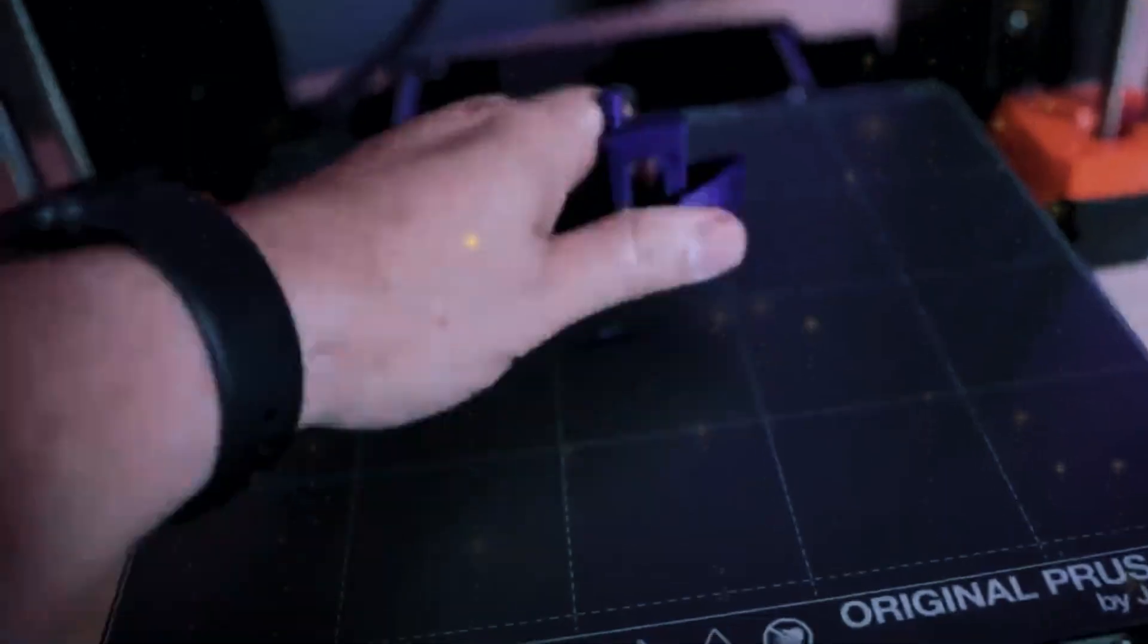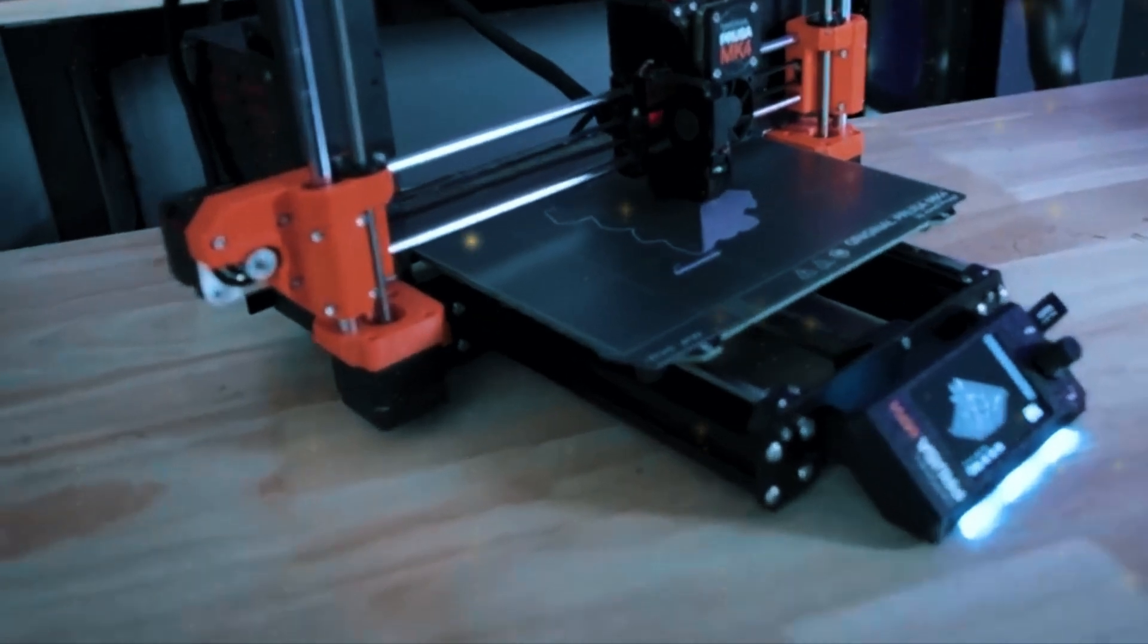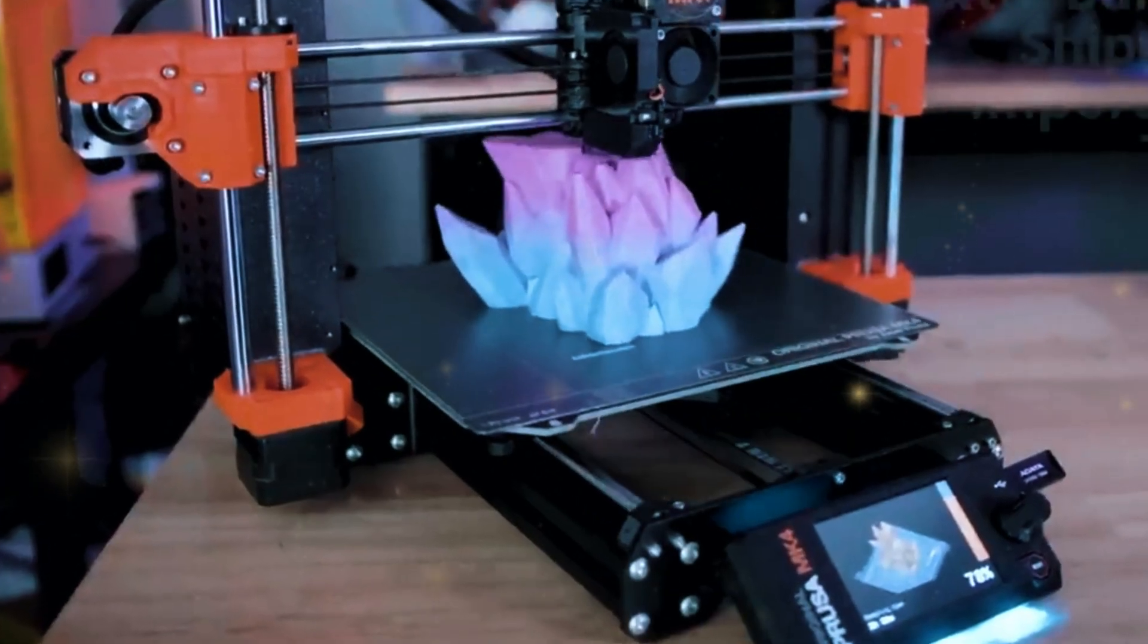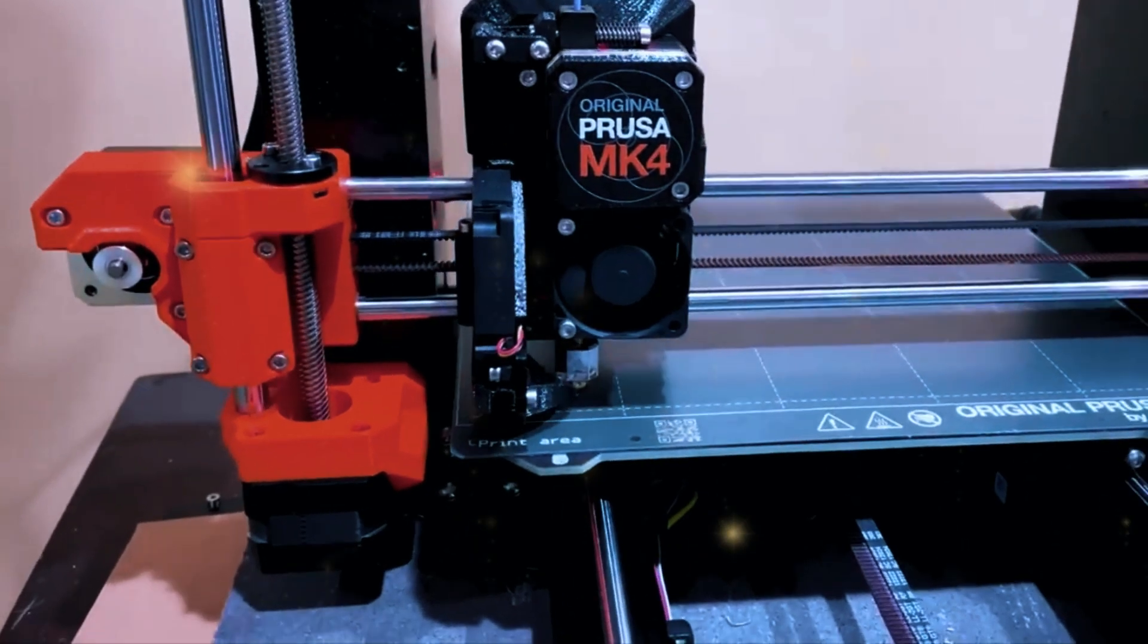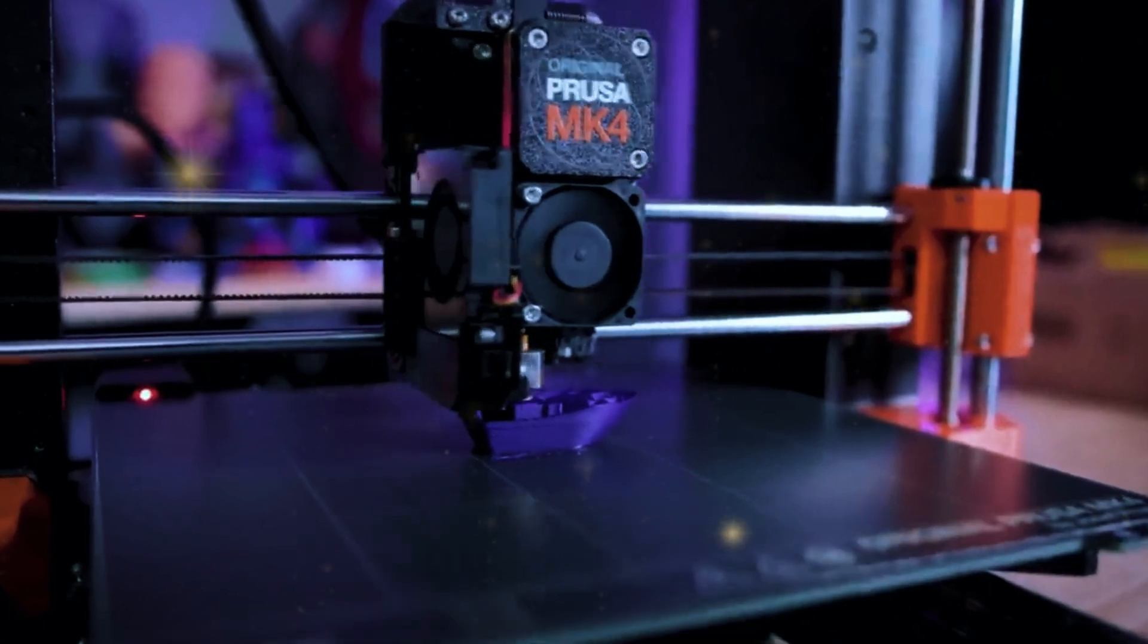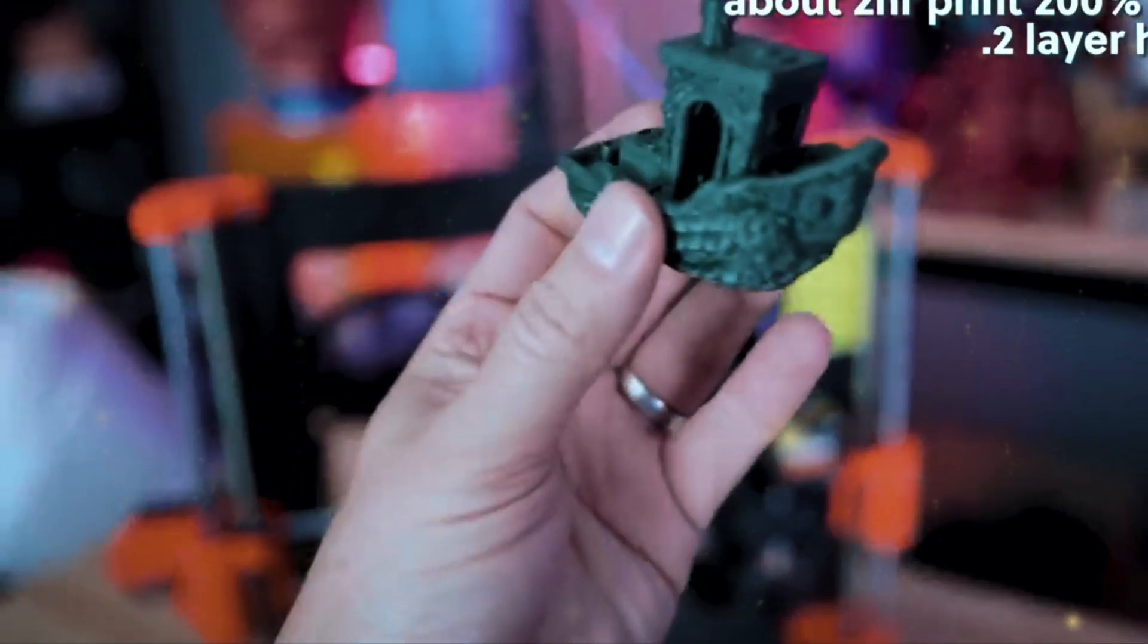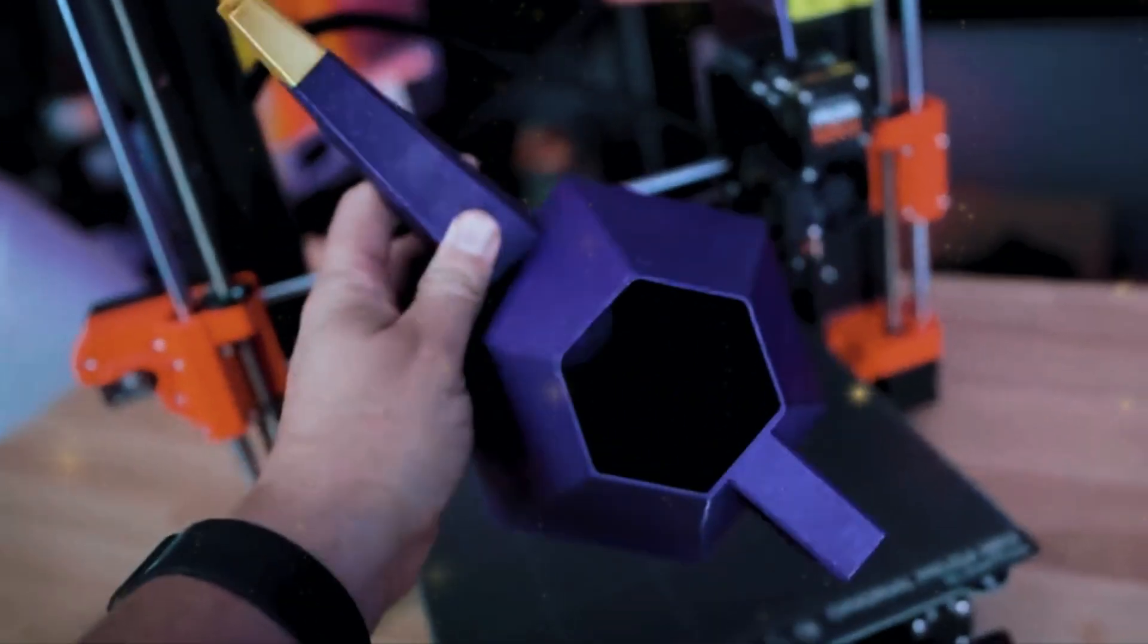The printer also comes with Prusa's famous customizable print profiles, which allow you to fine-tune your print settings for the best possible results. The original Prusa MK4 is also known for its open-source design and active community, which means that you'll have access to a wealth of resources, including firmware updates, print profiles, and user modifications, all of which can help you get the most out of your machine. For anyone serious about 3D printing, whether as a hobby or a profession, the original Prusa MK4 is the ultimate choice. Its combination of precision, reliability, and user-friendly features make it the best 3D printer you can buy in 2024.